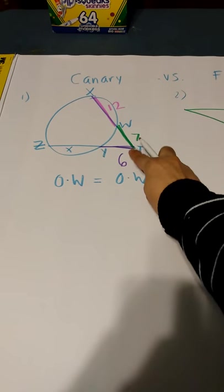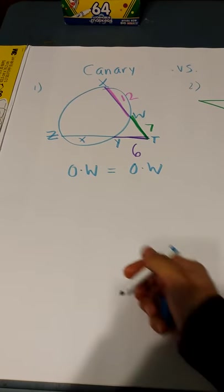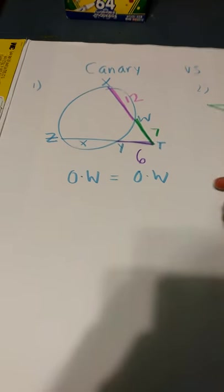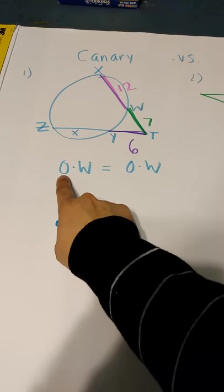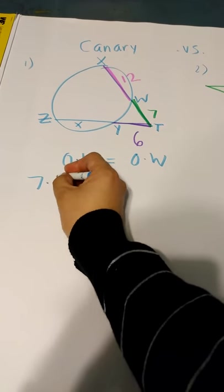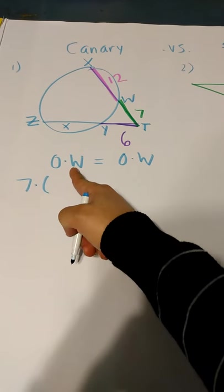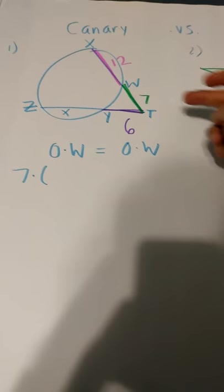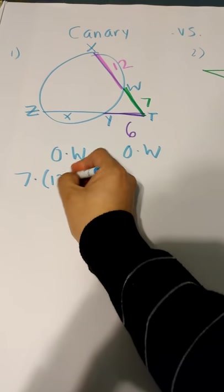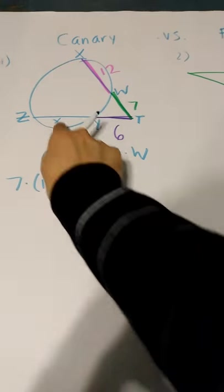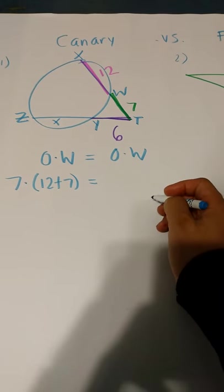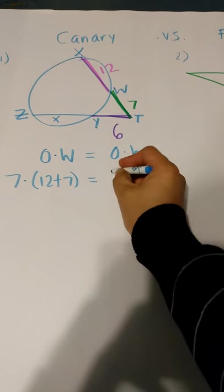Notice, let's start with the pink and the green part. The O would be for the outside. The outside part is the X plus seven, so we have seven. We're going to multiply by the whole length of the whole line. The whole thing would be twelve, and also seven, twelve plus seven.